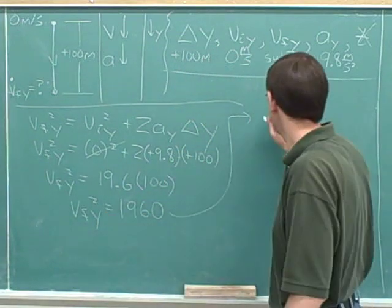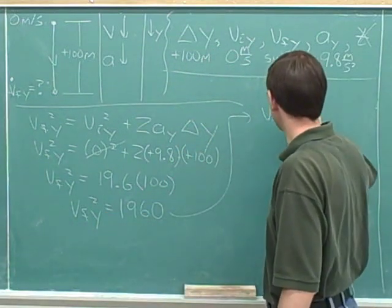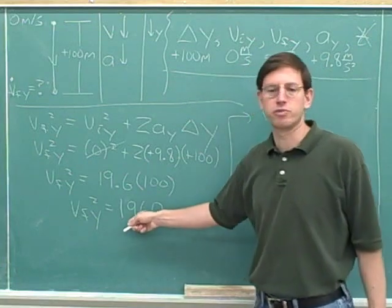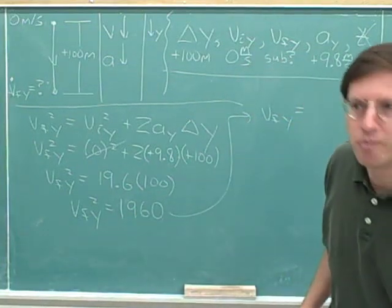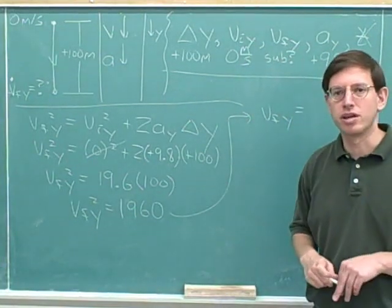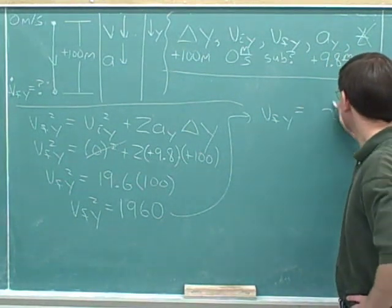If you take the square root of the left-hand side, you'll figure out what the final velocity is. And now we have to take the square root of the right-hand side. But there's really two square roots. There's a positive square root, and there's a negative square root.